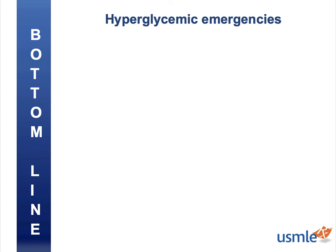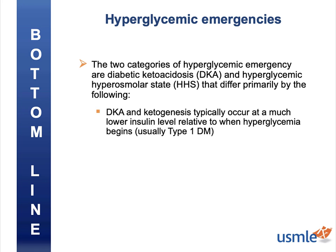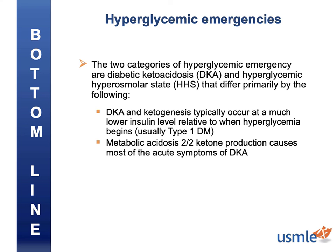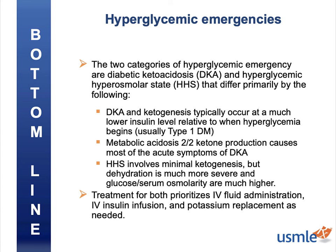There's a lot to know about hyperglycemic emergencies, but here's the bottom line. The two categories are DKA and HHS. DKA and ketogenesis typically occur at much lower insulin levels relative to when hyperglycemia begins. Metabolic acidosis secondary to ketone production causes most of the acute symptoms of DKA. HHS involves minimal ketogenesis, but the dehydration is typically much more severe and the glucose and serum osmolarity are much higher. Treatment for both prioritizes IV fluid administration, then IV insulin infusion and potassium replacement as needed.